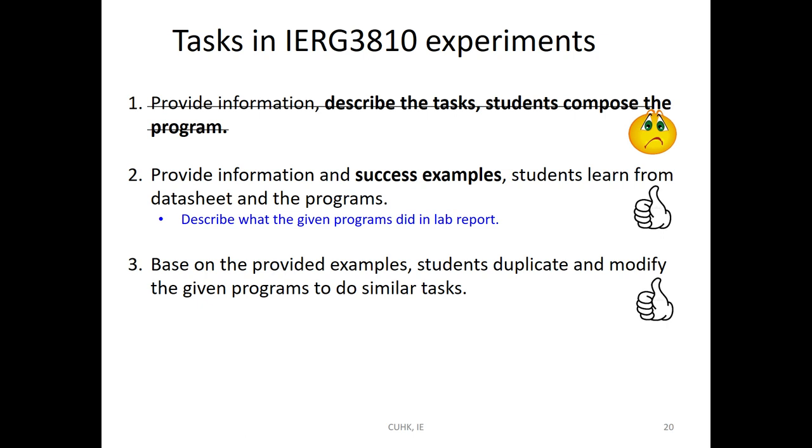Now, in our experiment, what matters is, for example, we describe the task. Then, students compose the program. I think this is no good, right? So, we will use another trend. Then, we will give you some example. But, you have to study the example. And what the example given program did. Then, try to read the data sheet, understand the program. Understand how they work. Then, based on the knowledge. Then, you can duplicate and modify our given program. Then, do the similar task.